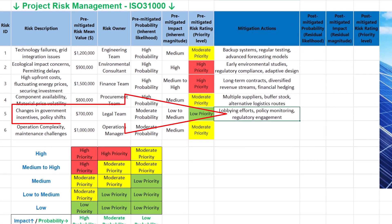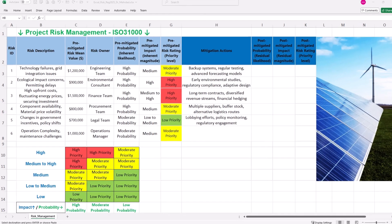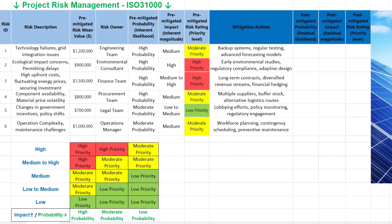Implementing mitigation actions such as lobbying efforts, policy monitoring and regulatory engagement aligns with best practices for managing risks associated with changes in government incentives and policy shifts. Proactive engagement with policymakers and continuous monitoring of the regulatory environment are essential strategies to anticipate potential policy changes. For operational risks, implementing workforce planning, contingency scheduling and preventive maintenance aligns with best practices. The Electric Power Research Institute emphasizes that maintenance planning and scheduling are critical for optimizing resource utilization and minimizing downtime. To complete our risk register, we must calculate post-mitigation values of residual likelihood and residual impact.